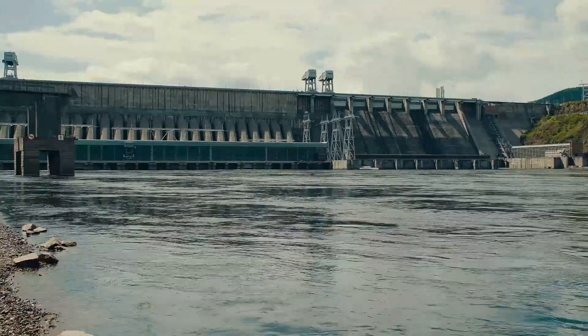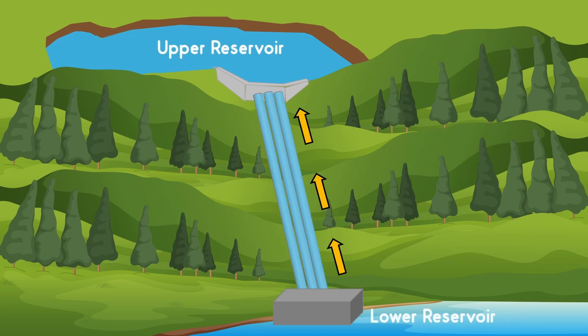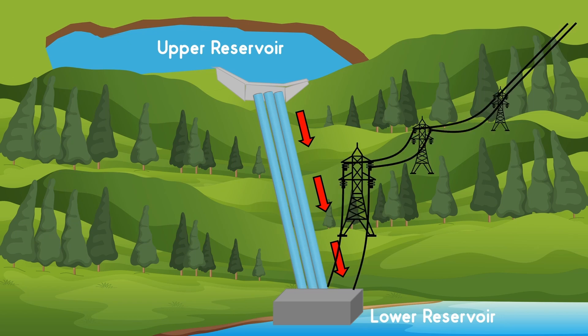Hydropower plants are the best solution for the peak load, especially pumped hydro. When the electricity demand is low, the pumped hydropower plants store energy by pumping water from the lower reservoir to the upper reservoir. During peak load, the water is released back to the lower reservoir which turns the turbine, thus generating electricity.